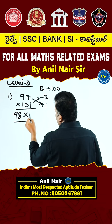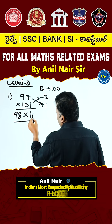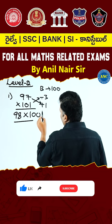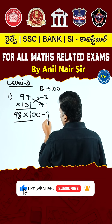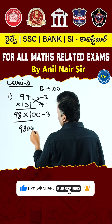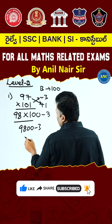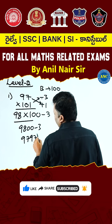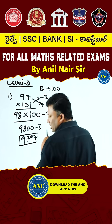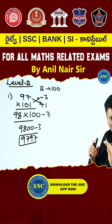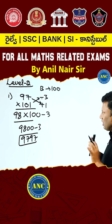98 into base 100. Minus into plus is minus 3. So 9800 minus 3. That gives us 9797. That's the only difference.